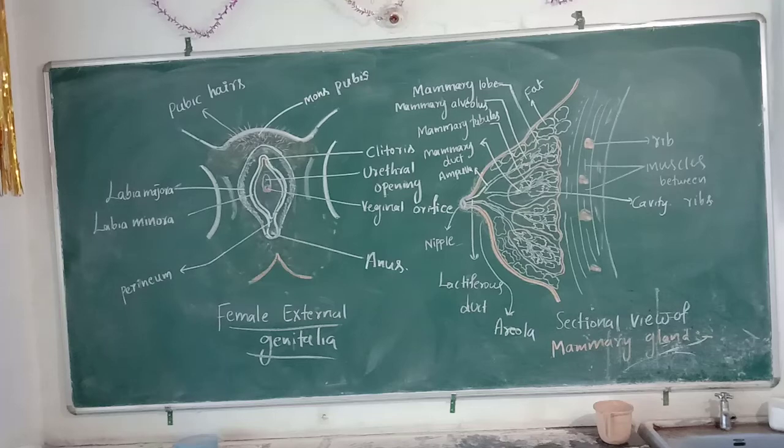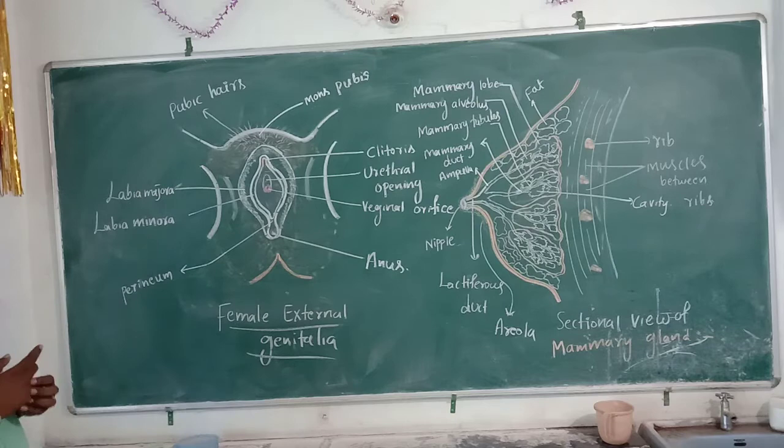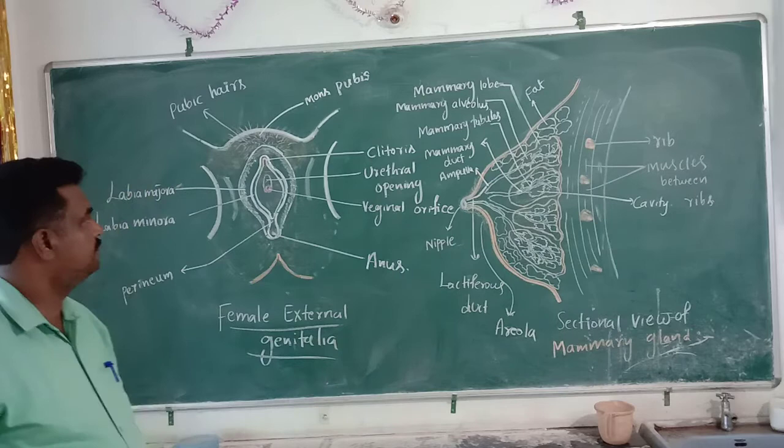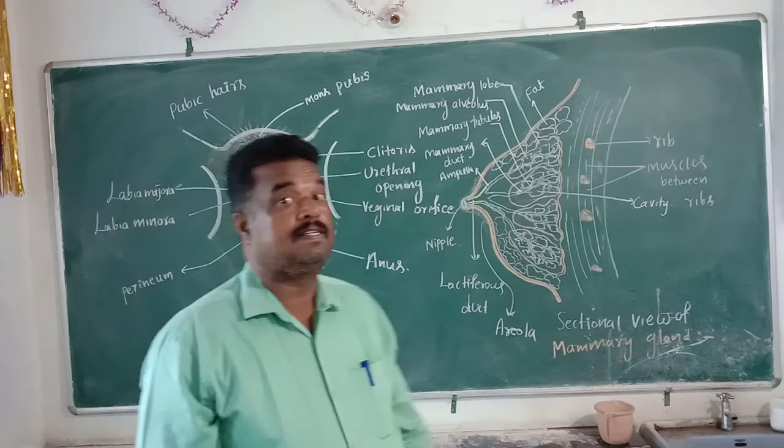Good afternoon students. In the previous class we were discussing about the female reproductive system. In that we completed ovaries, fallopian tubes, uterine, cervix, and vagina.